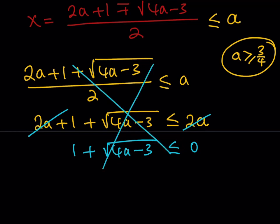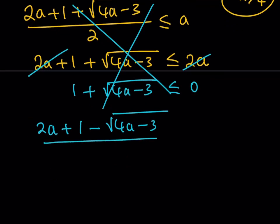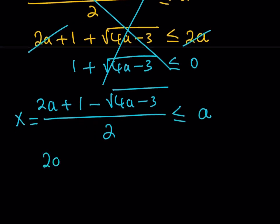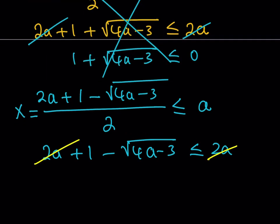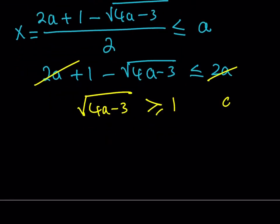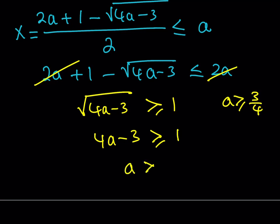Now let's consider the minus-sign solution. Again applying the condition x ≤ a: (2a plus 1 minus √(4a minus 3)) / 2 ≤ a. Multiplying both sides by 2 and canceling the 2a terms gives us 1 minus √(4a minus 3) ≤ 0, or equivalently √(4a minus 3) ≥ 1. Since both sides are non-negative, we can square: 4a minus 3 ≥ 1, so adding 3 and dividing by 4 gives a ≥ 1.